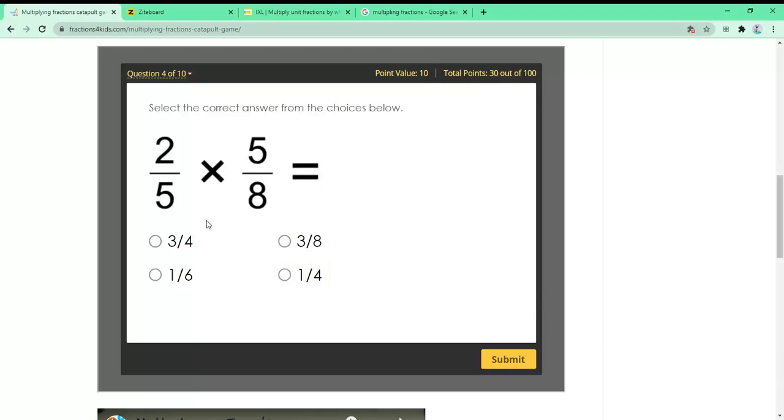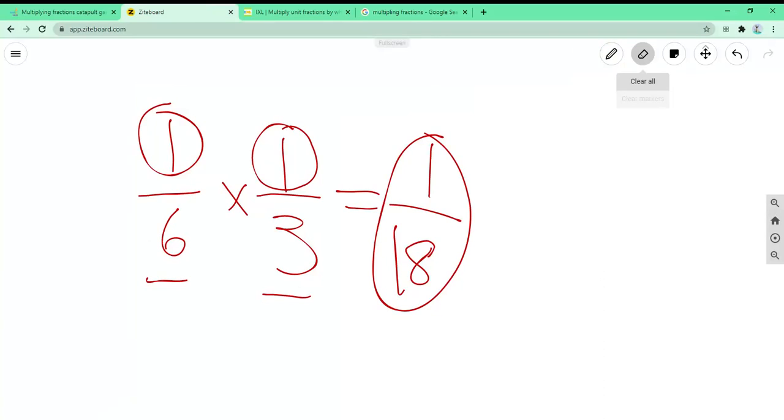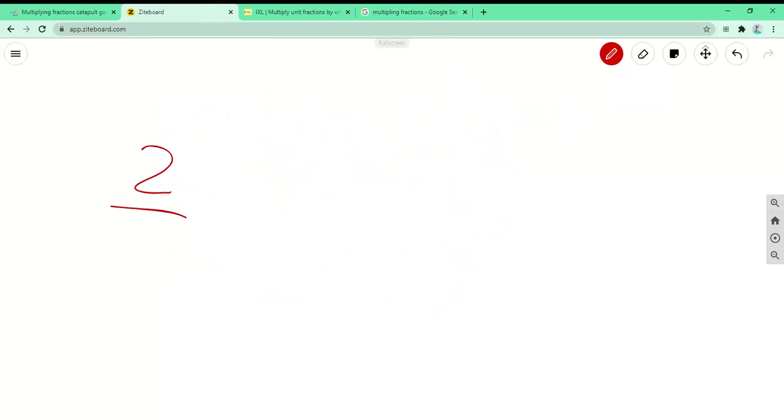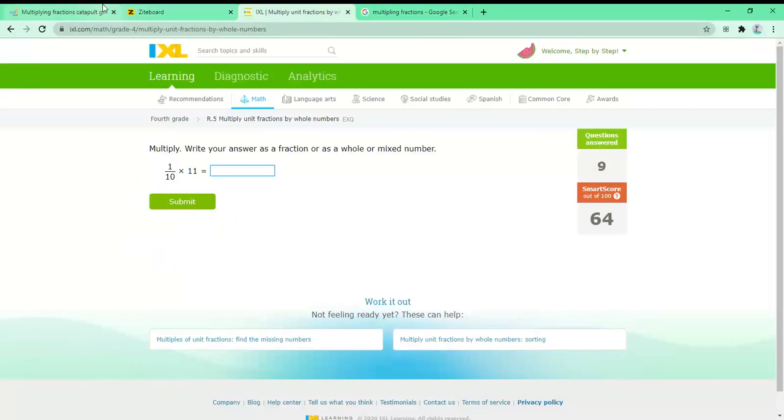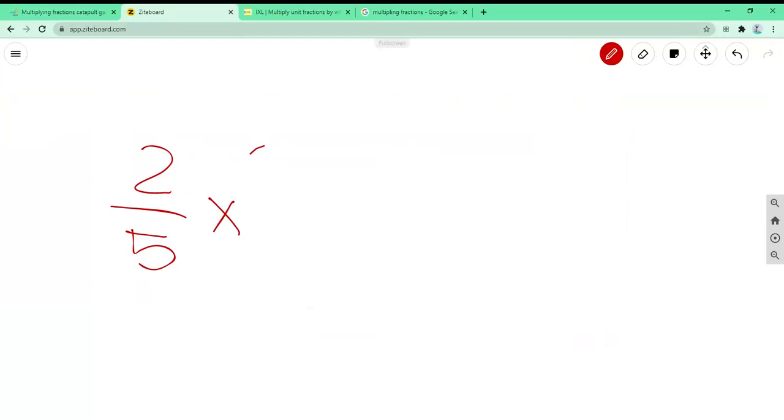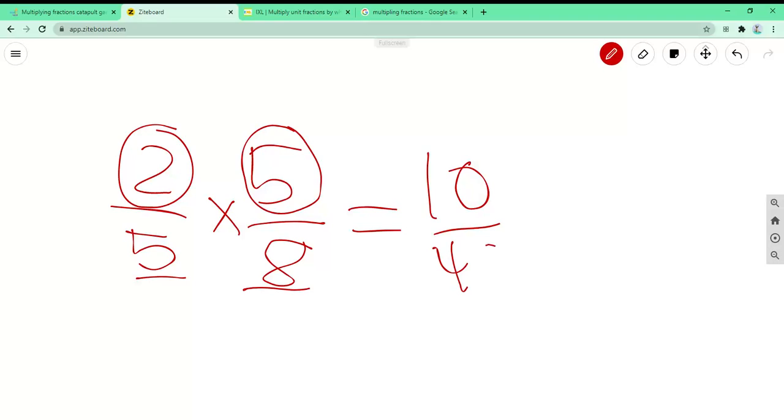Let's do one more. So let's write down 2 over 5 times 5 over 8 equals. 2 times 5 is 10 over 5 times 8 is 40. And you can simplify it by 2. 10 I mean.